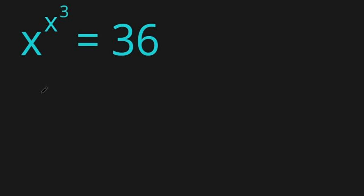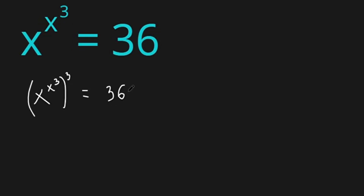So what we are going to do, we are going to raise both sides by 3. So we have x to the power of x to the power of 3, all this to the power of 3, is equals to 36 cubed.